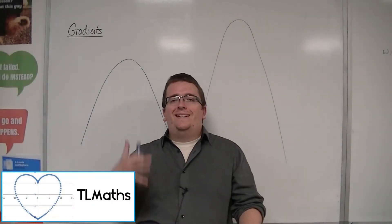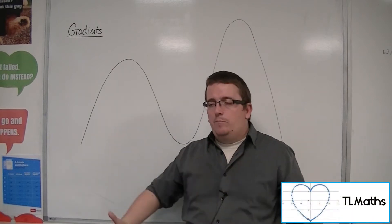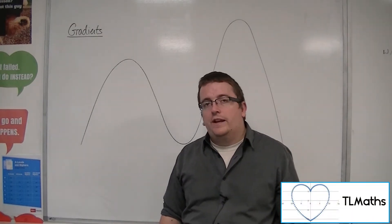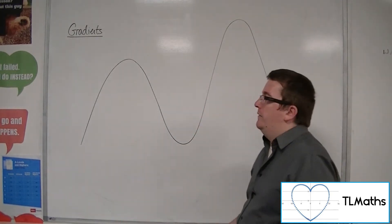So the gradient function can tell me the gradient of a tangent line at any point on the curve that I like. I just need to substitute that x value in and then I get the gradient of the tangent line.